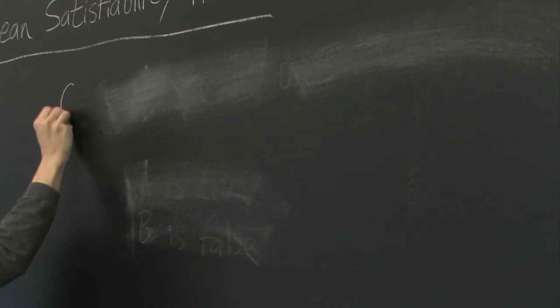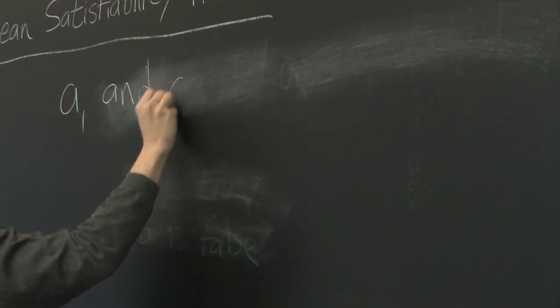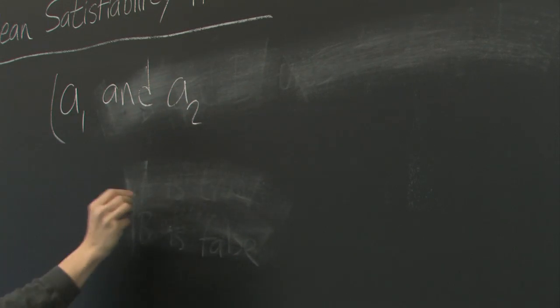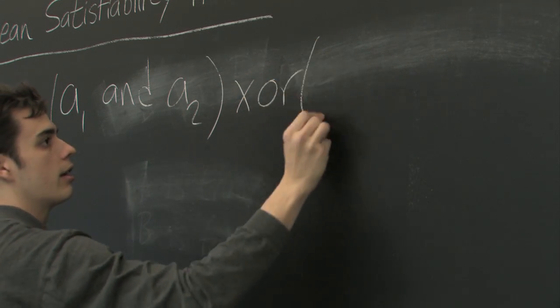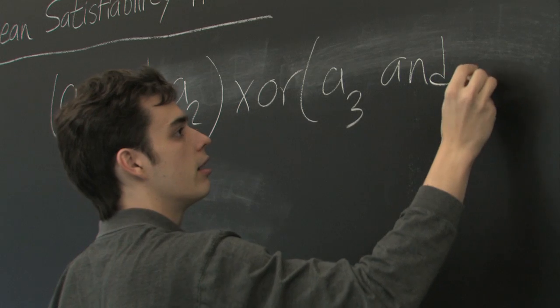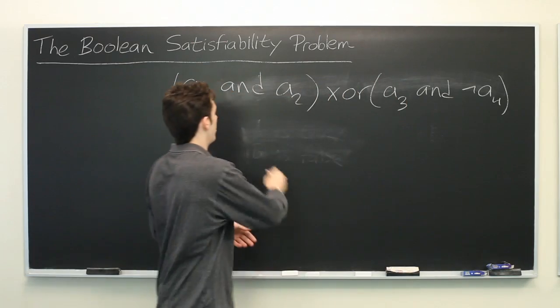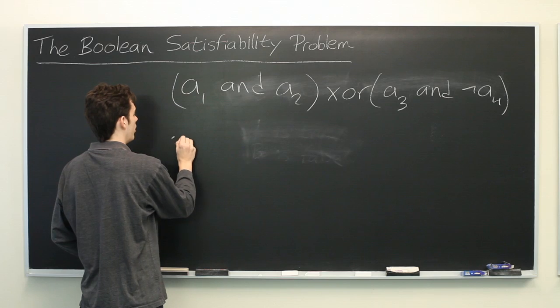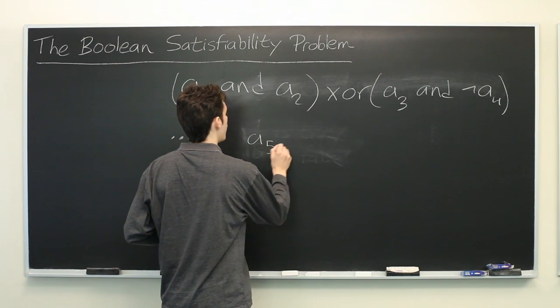You have A1 and A2 parentheses exclusive or A3 and not A4 and it just keeps going and going and you end up using 50 different variables.